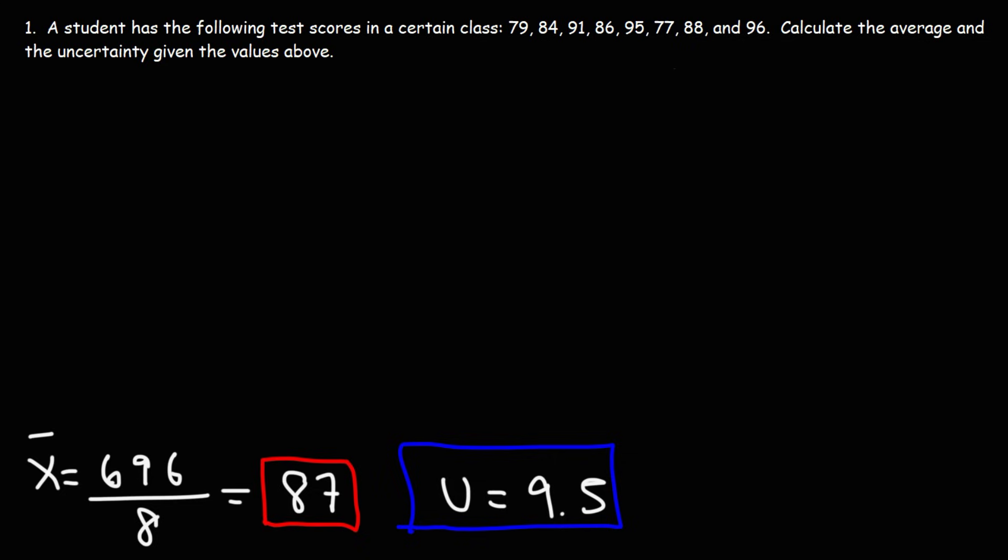So now we can write the range of the test scores like this. So we have the mean 87 plus or minus our uncertainty, which is 9.5. But typically, the uncertainty is usually rounded to one significant figure. So we're going to round it to 10.